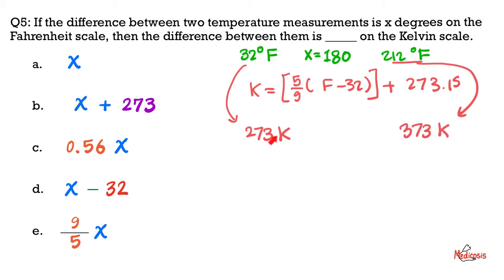What is the delta? What's the difference between them? 373 minus 273. Oh, here is a delta of 100 instead of 180. So this 100 is how much of the x?